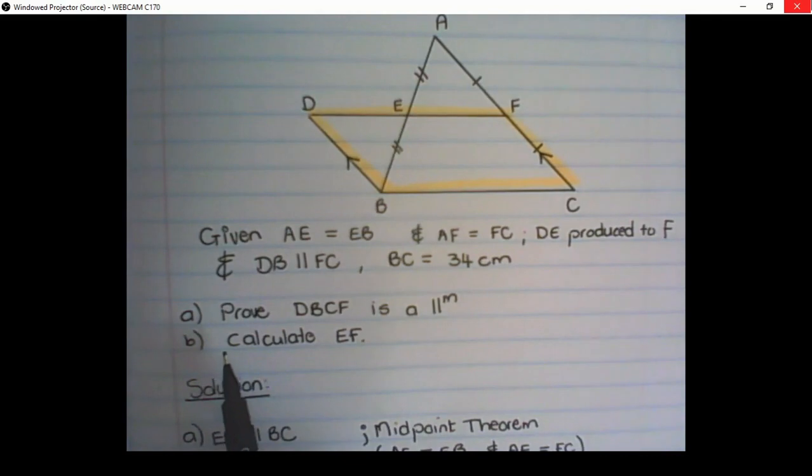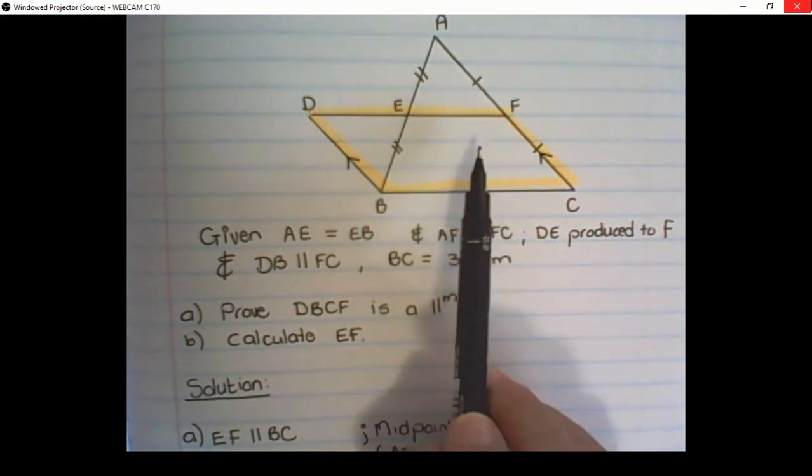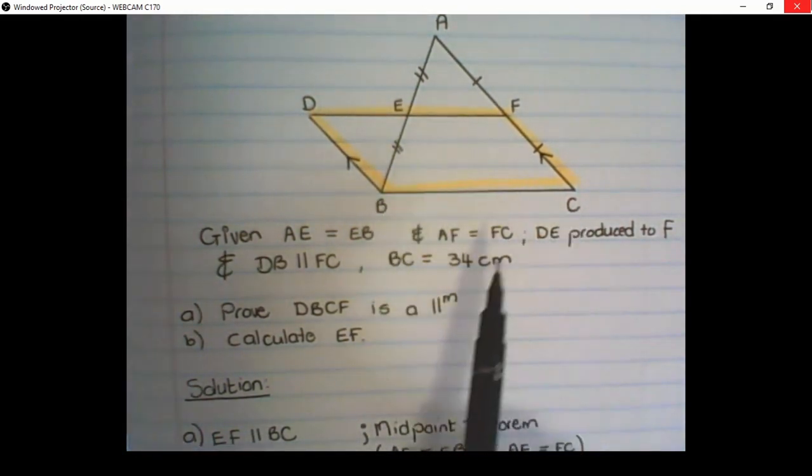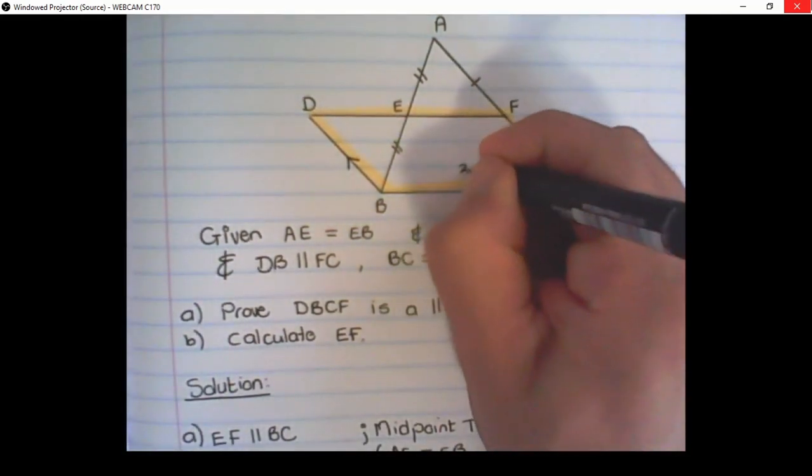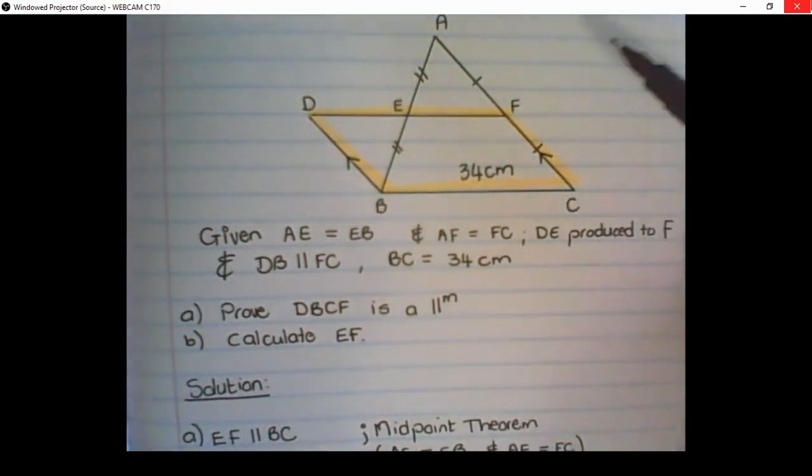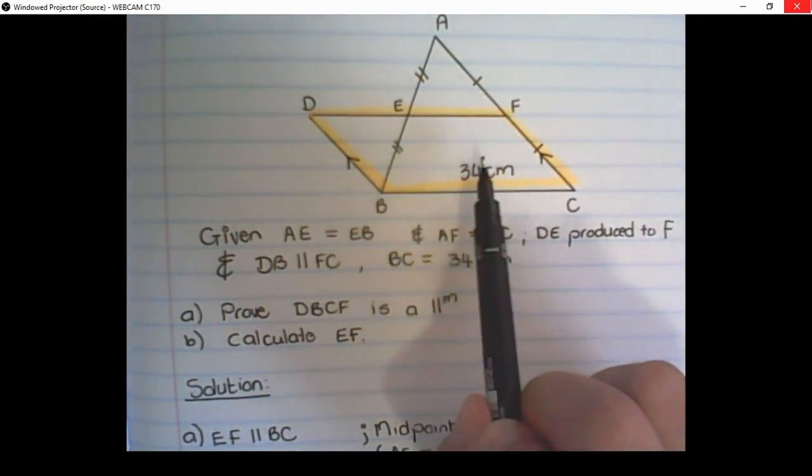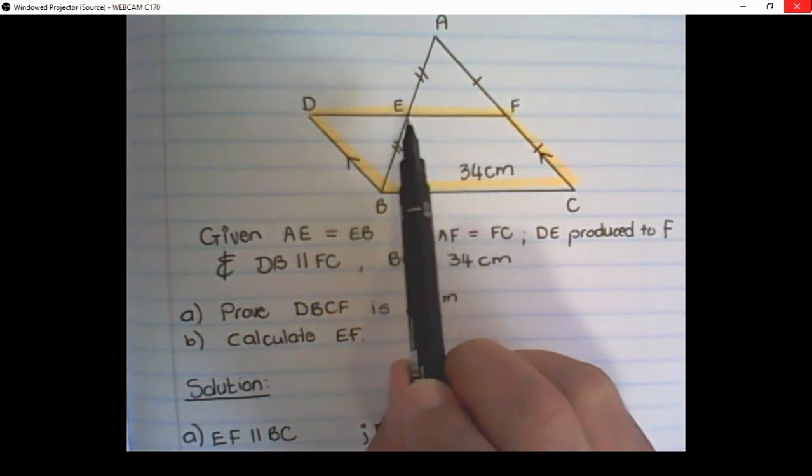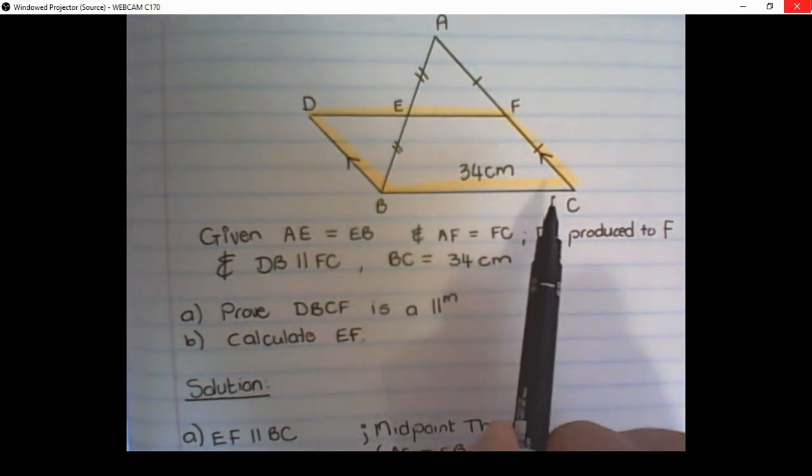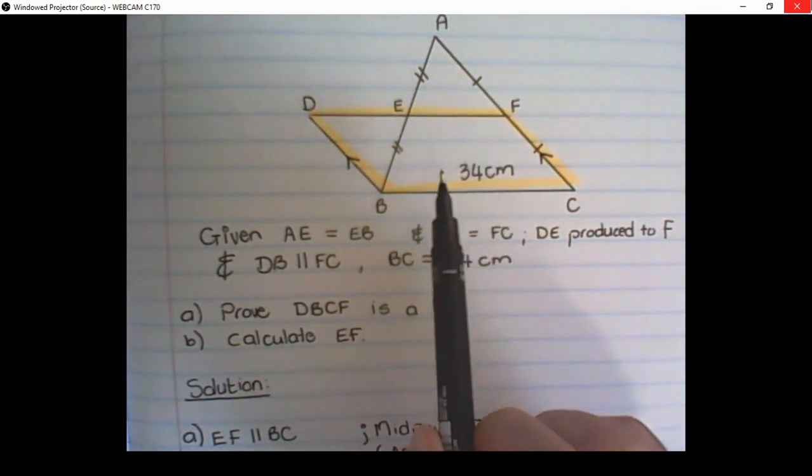The second question says, Calculate EF. Now, EF is that line given there. And we have information on BC. We know that BC is 34 cm. And because these lines are equal to each other, we can apply the midpoint theorem again, and say that EF is half of BC's length, therefore EF is half of 34 cm.